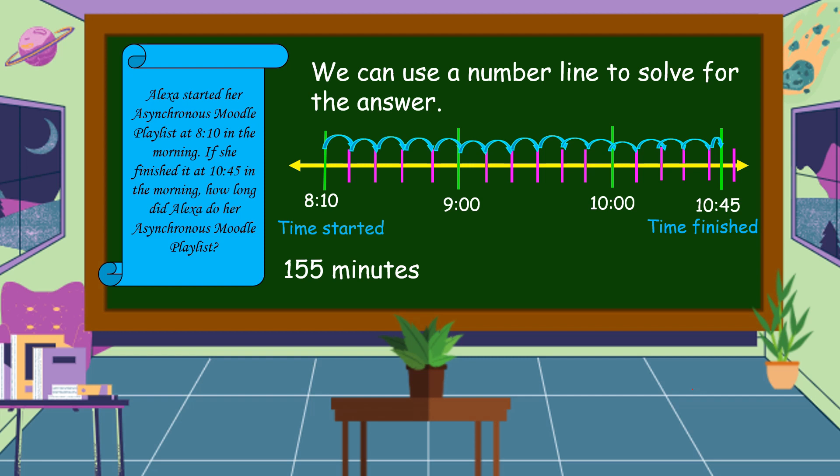Then, we're going to convert 155 minutes to hours. As we all know that 1 hour is 60 minutes. So, 60 plus 60 is 120, plus 35 is 155.